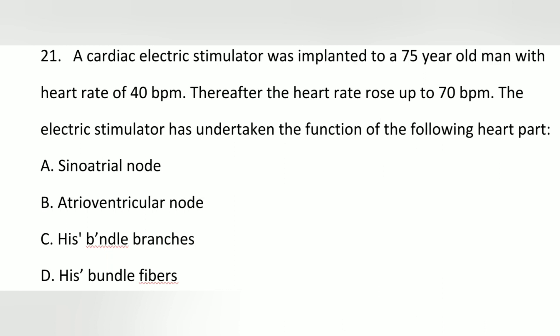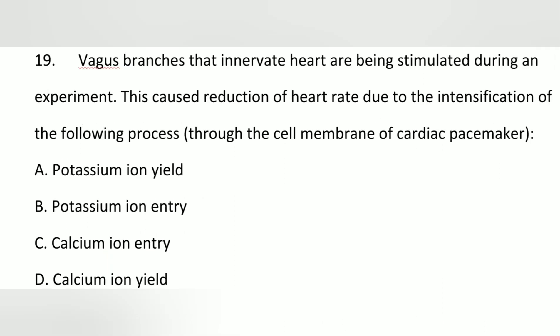Heart rate begins to rise from 40 bpm to 70 bpm. After 40 bpm, the SA node takes over because it can generate 60 to 80 beats per minute. Here we have 70 bpm, so the answer is the SA node. Potassium ion yield and vagus branch innervation are also covered.